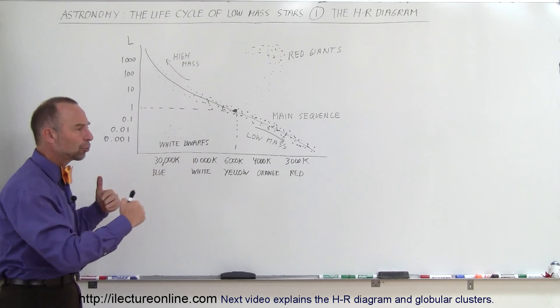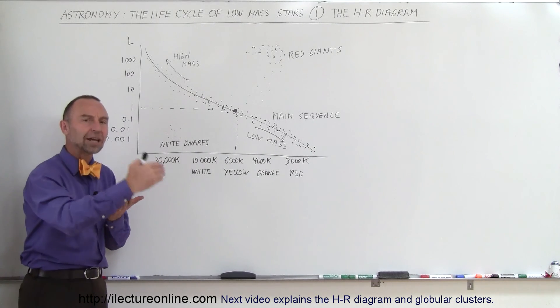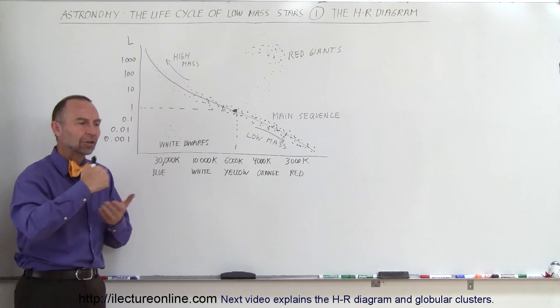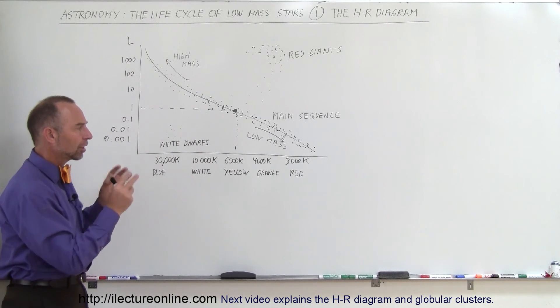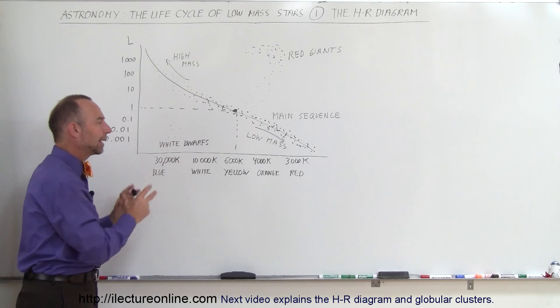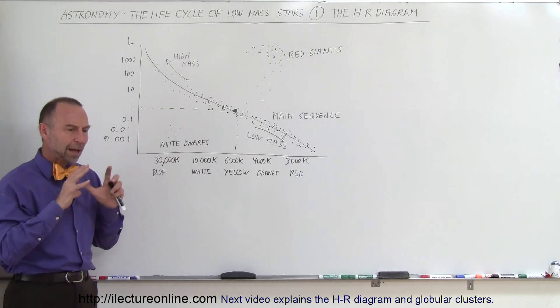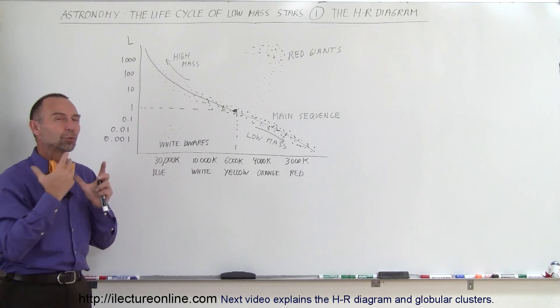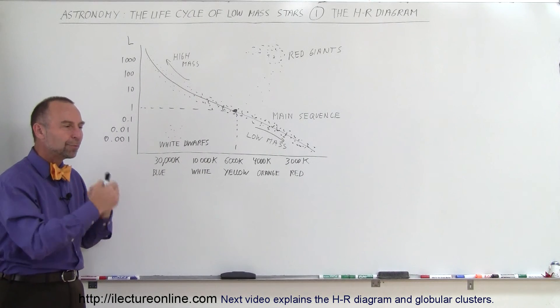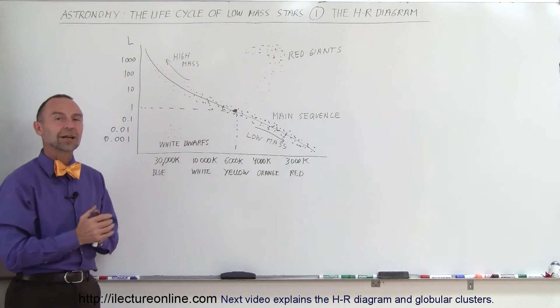So the HR diagram was really the start of our understanding of stars and the fact that they had a life cycle that would change, had a changing process through which they went, and how they started in a certain way and ended up in a certain way. Let's go to our next video, where we will learn about how taking globular clusters and putting those stars on the HR diagram really told us a good story about what the formation of stars was and how stars would go through their end life cycle.